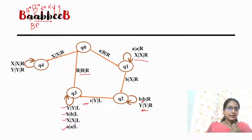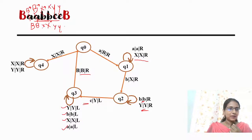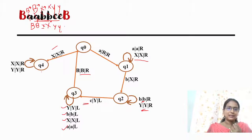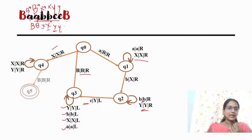I will go to the right. The current status is blank. B is replaced by X, C is replaced by Y. The last thing is blank, then Y. I will move left. The left is blank, the right is blank. I will accept the same state — replace and accept.